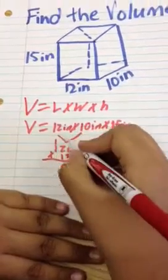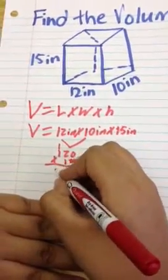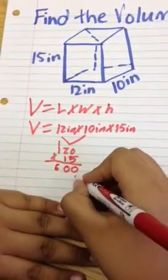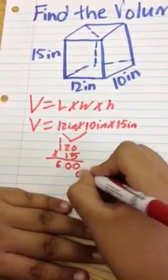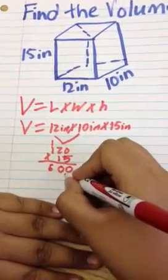5 times 1 equals 5 plus 1 equals 6. 1 times 0 is 0. 1 times 2 equals 2.